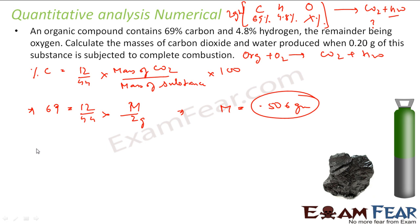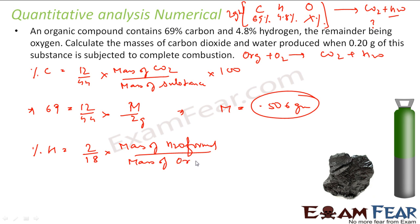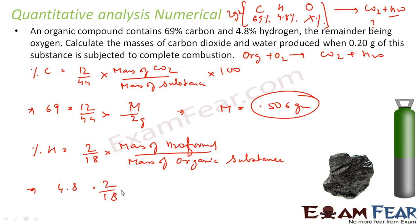Similarly, you can find the percentage of hydrogen. Percentage of hydrogen = (2/18) × (mass of water formed) / (mass of organic substance) × 100. So 4.8 = (2/18) × h / 2 × 100, where h is mass of water formed. Solving this, h = 0.0864 grams.